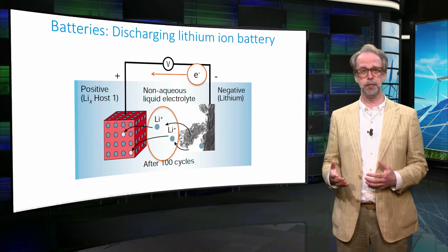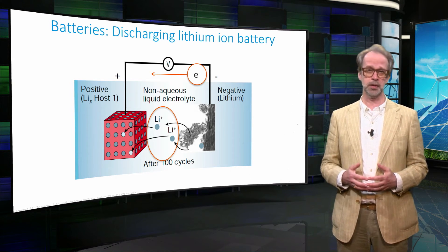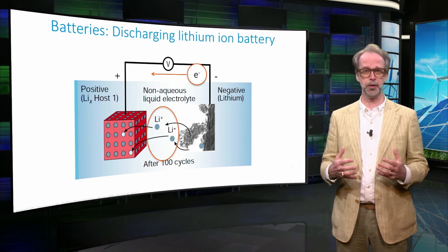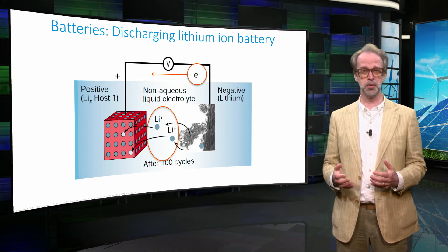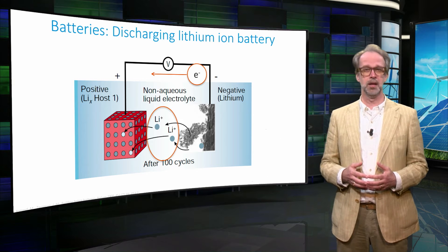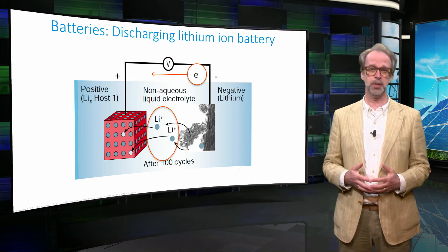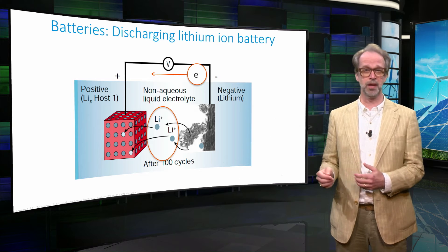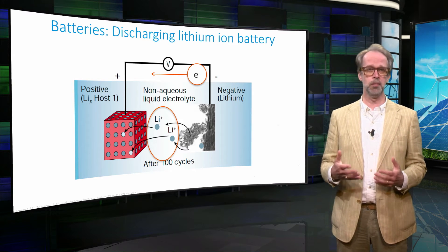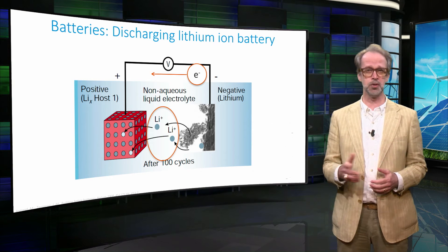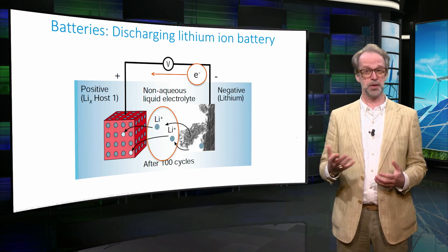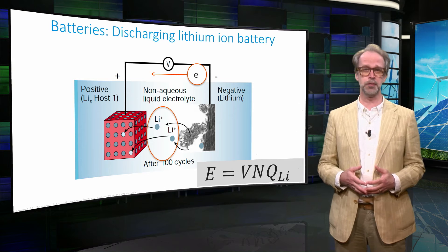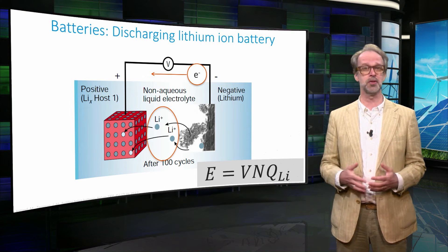Lithium ions move from the anode to the cathode through the electrolyte. At the cathode, the lithium ions react and are absorbed by the host material, while the electron is used for charge compensation. The output voltage of the battery depends on the difference in energy of the lithium being in the metal or in the host compound. The capacity of the battery is determined by the number of lithium ions that can be shuttled between the two electrodes. The stored energy equals the potential difference V times the number of shuttled ions times the charge of a single ion.